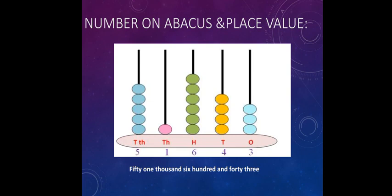4 tens, so we have drawn 4 beads in the tens spike. Similarly, 6 beads in the hundreds and 1 bead in the thousands and 5 beads in the 10,000. By using the place values, we are drawing the beads on the corresponding spikes.